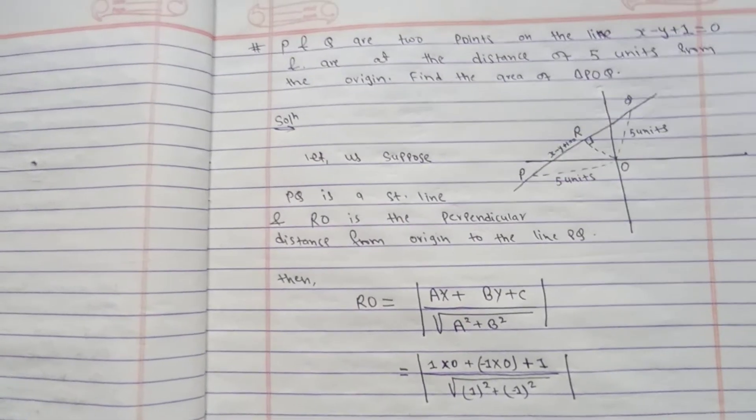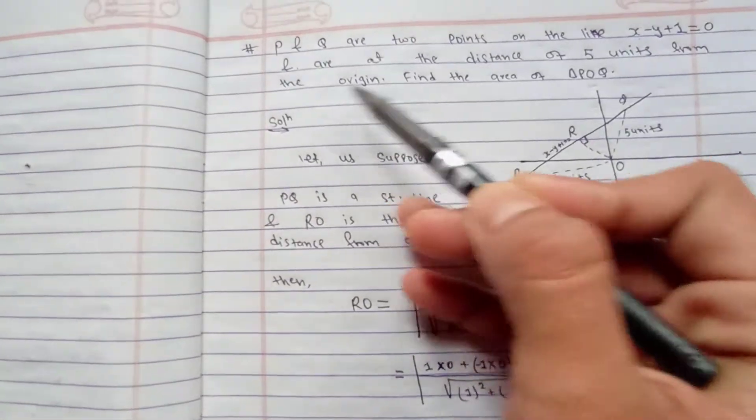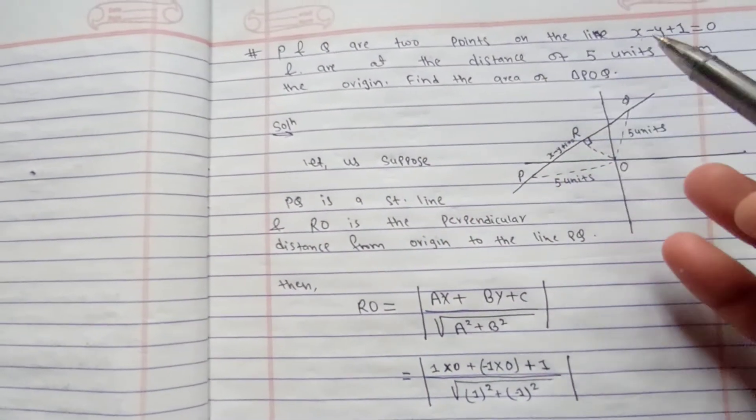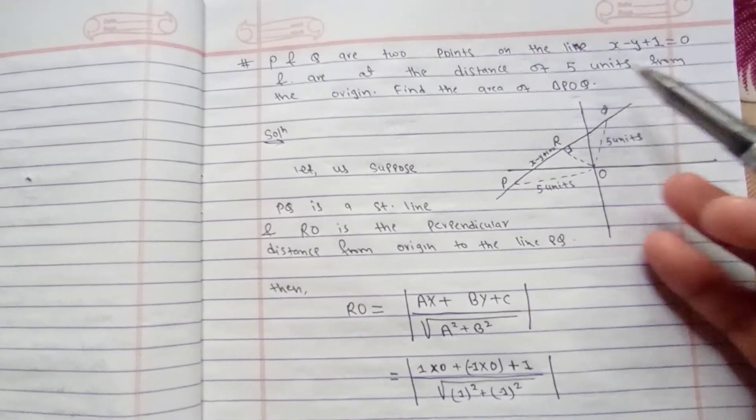P and Q are two points on the line x minus y plus 1 equals to 0 and are at a distance of five units from the origin. Find the area of triangle POQ.